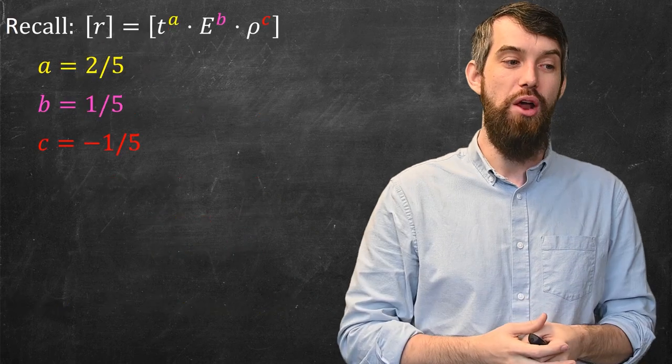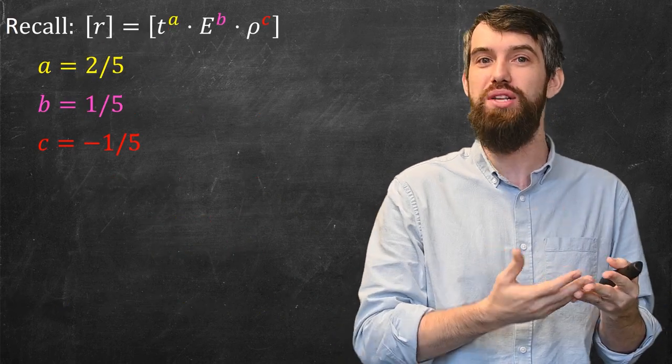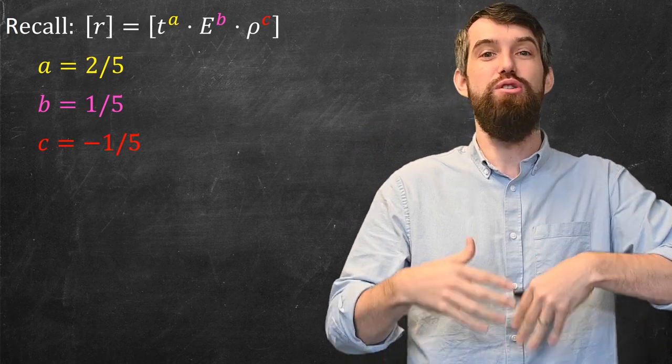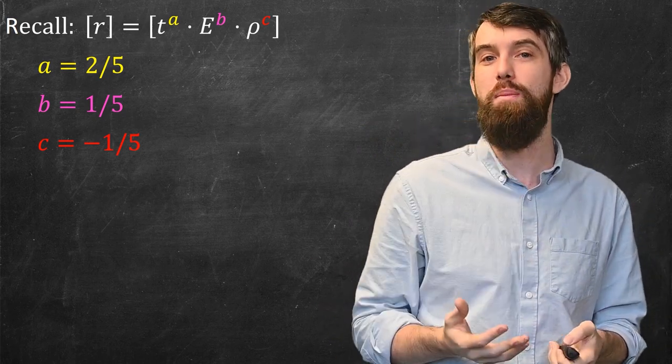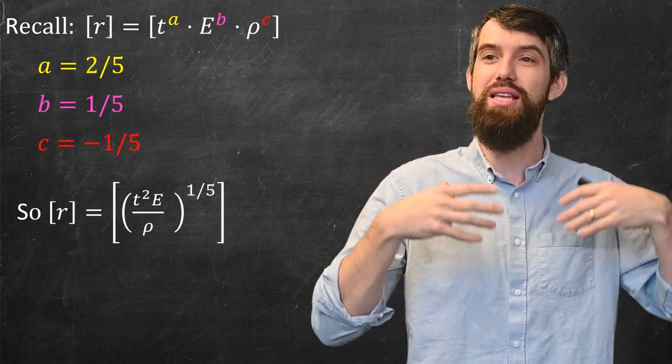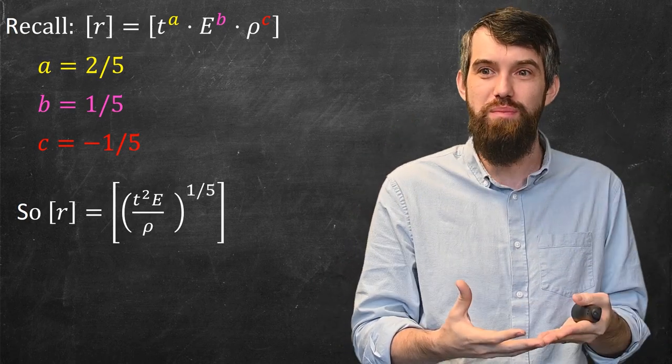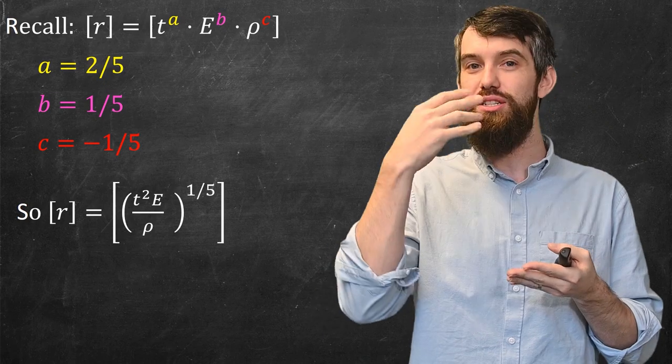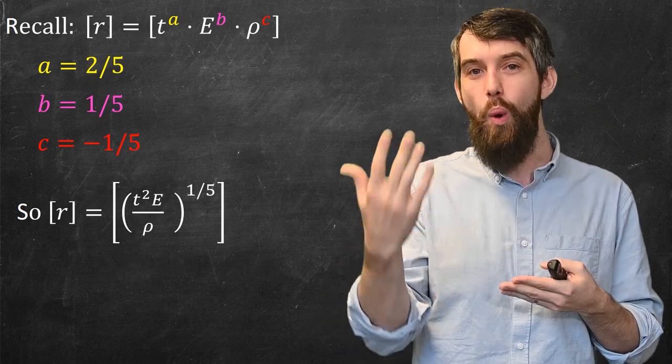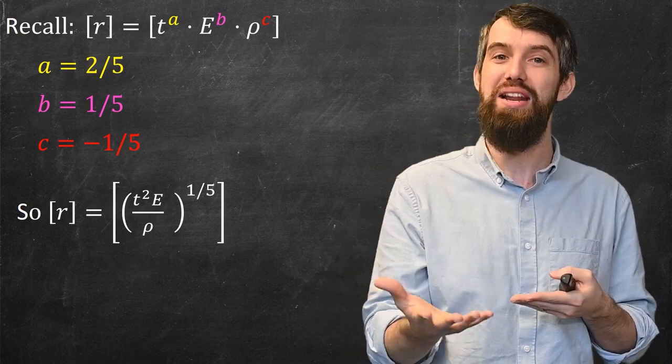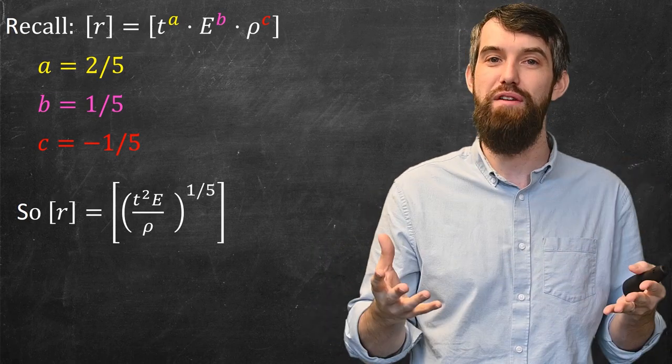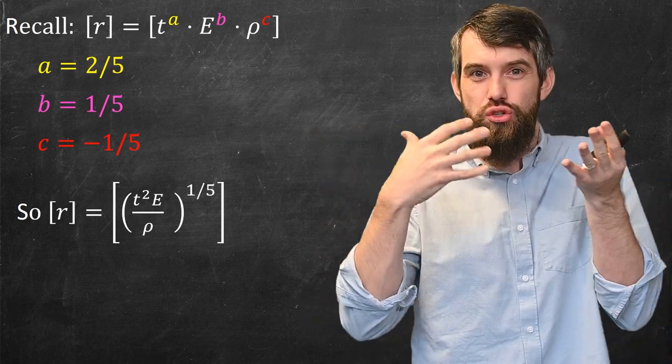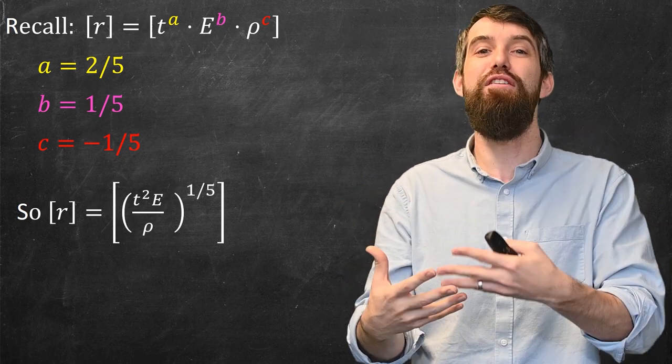Anyways, what's the point of this? So remember what we were doing, we were trying to write r as a combination of the t, the e, and the density, and we were trying to make those dimensions match. Now we know the power that has to work, and so what we have is that the dimension of r can be written as the dimension of this combined expression, t to the 2 fifths, e to the 1 fifths, and rho to the minus 1 fifths, where I take the 1 fifths and I pull it out of the brackets here. So this tells me the structure to which f must be.